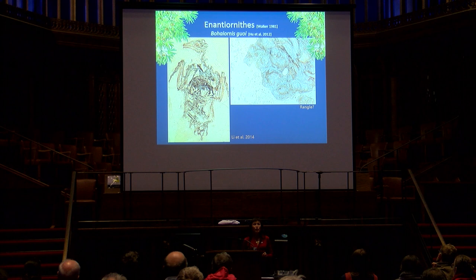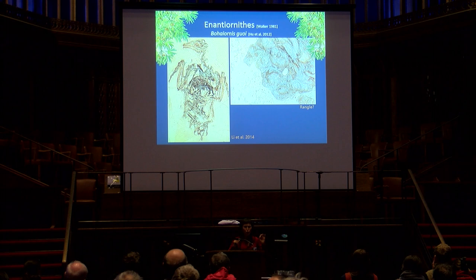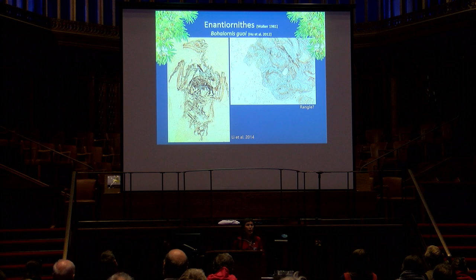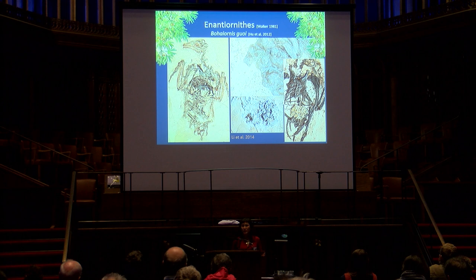Enantiornithines is the most diverse clade in the Jehol and in the entire Cretaceous avian fossil record, accounting for the greatest number of specimens — even more than the Confuciusornithormes. Despite this huge wealth of specimen data, there are only two specimens from the Jehol that preserve purported direct evidence of diet. The first is a referred specimen of Bohaiornis, described as preserving rangle — stones ingested by living carnivorous birds to clean out the digestive system. However, when you compare this purported rangle to gastroliths in other known Jehol birds, you can see morphological differences, and I interpret it as probably some weird mineral precipitate.